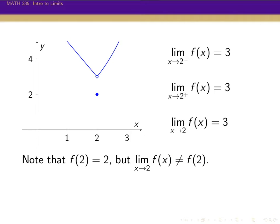Now in this case, as we go from left and right, they're both going to the same value — three. So we say that the limit of the function as x goes to two equals three. The two one-sided limits agree, so that's also the value of the whole limit coming from both sides together. The final thing to note: what is the actual value of the function at two? If I actually plug in two, its y-value is two — that's what the dot there represents. But the limit of the function is three, not two. The limit doesn't care what's happening exactly at the value — it asks what happens when you're close to two, but not equal to two.